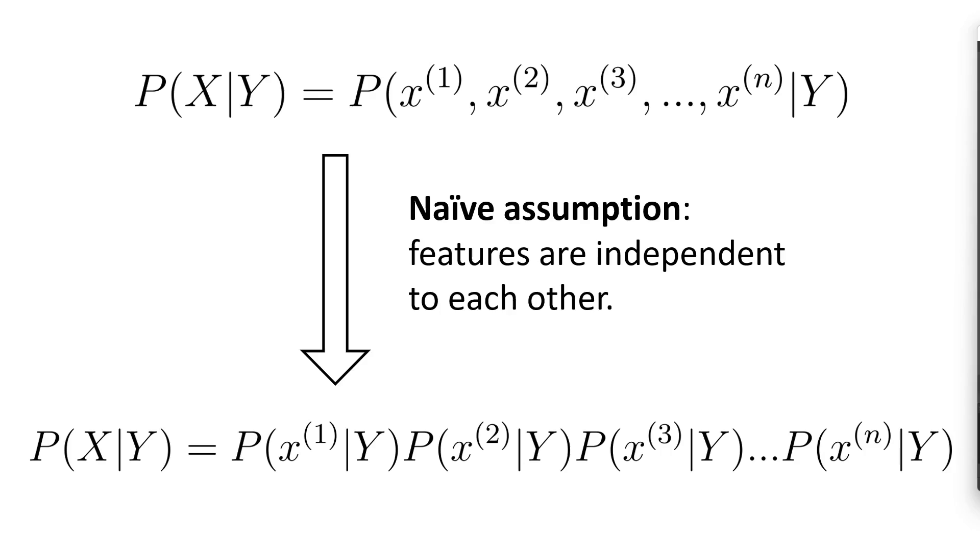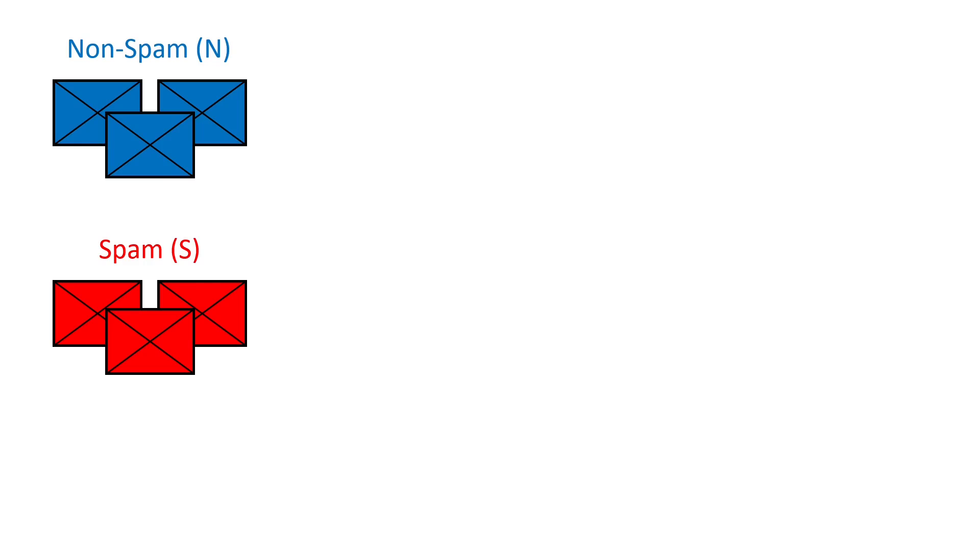And why we do that? Well, because in practice, it is actually quite hard to compute the probability of X given Y without this assumption. And now let's see how this assumption affects this algorithm in practice by looking at some possible applications.